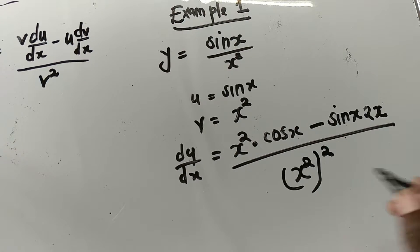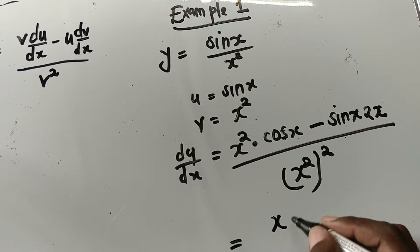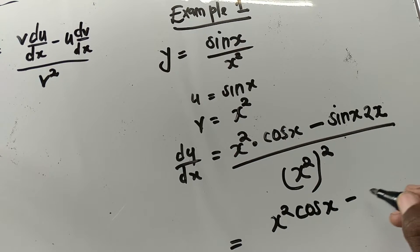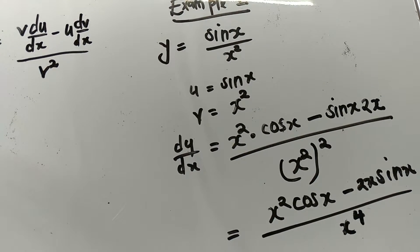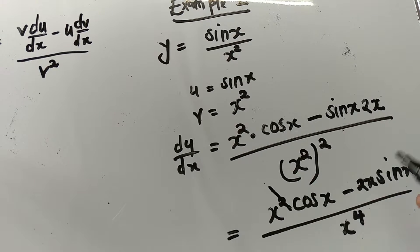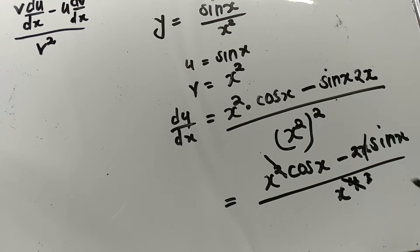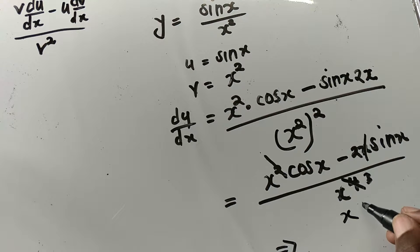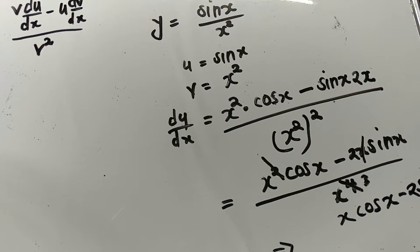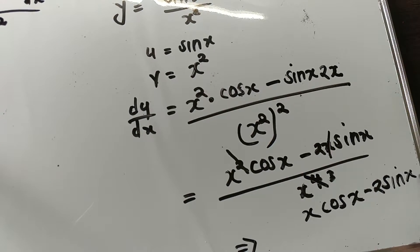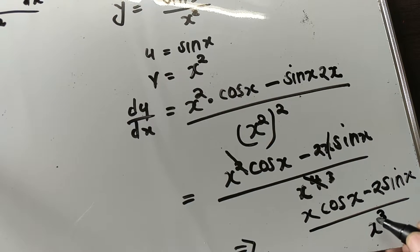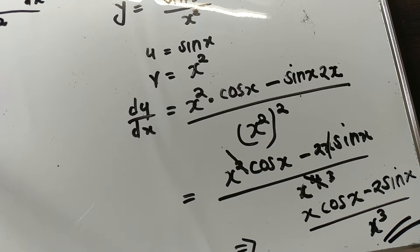This gives us x squared·cos(x) minus 2x·sin(x), divided by x to the power of 4. Now we can factor out x — cancel x common — so this becomes x·cos(x) minus 2·sin(x), divided by x to the power of 3. So this is the solution to our problem.